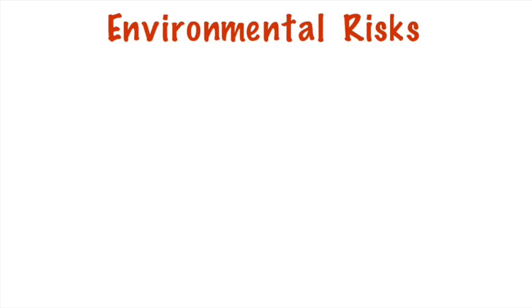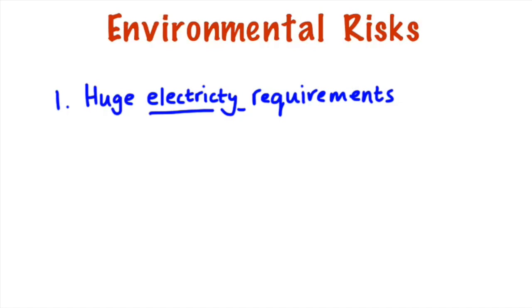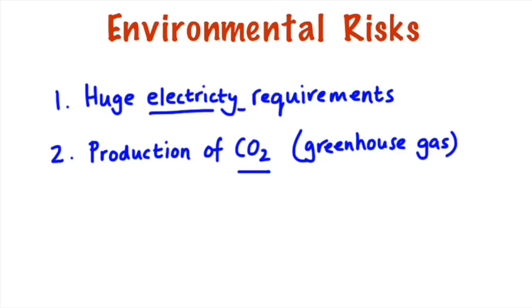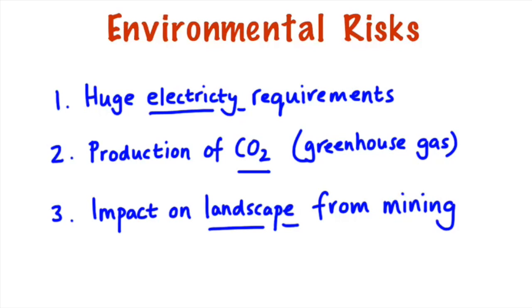What about the environmental risks? We're just going to consider three simple ones. Firstly, as I've mentioned, there's the huge electricity requirements to run the electrolytic cell. Secondly, you would have noticed that carbon dioxide was produced, and that's a greenhouse gas and contributes to climate change, and that's an environmental risk. And then finally, there's the impact on the landscape from the original mining of the bauxite ore.